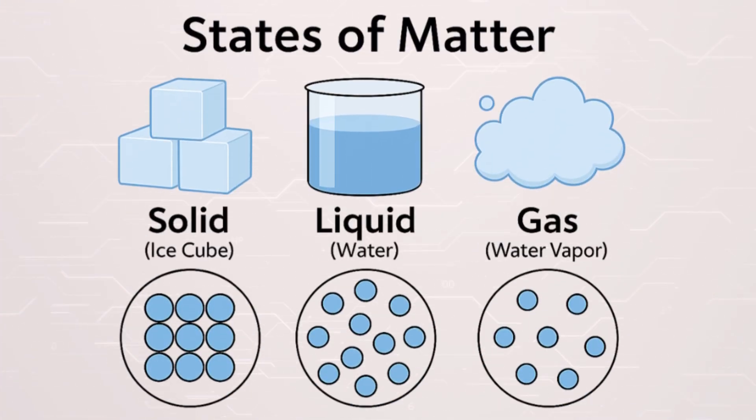Matter exists in different forms, called states of matter. The three main states, solid, liquid, and gas, are familiar to you.